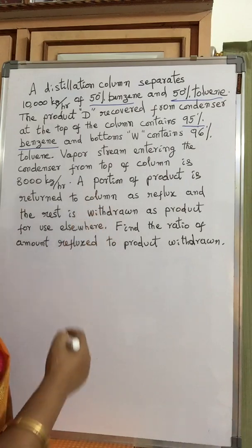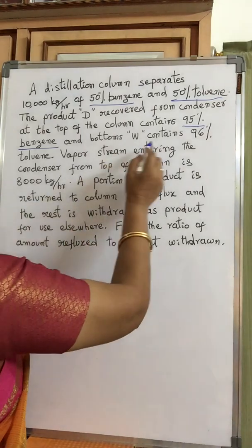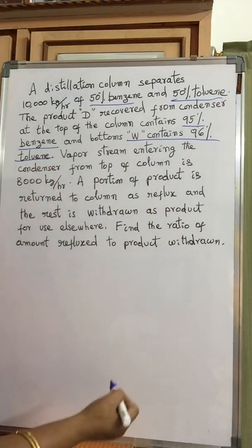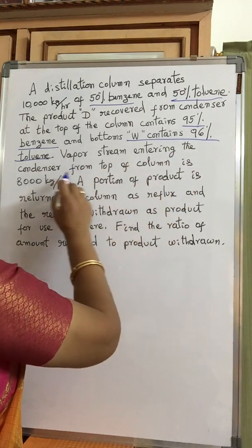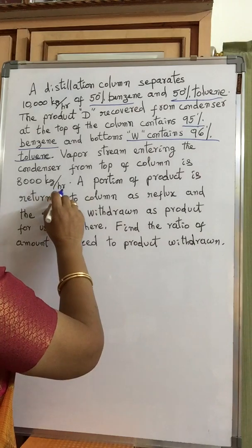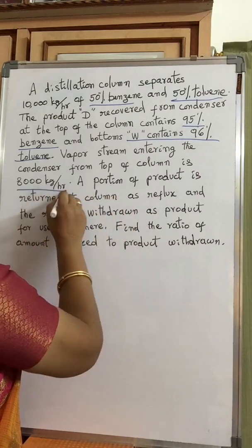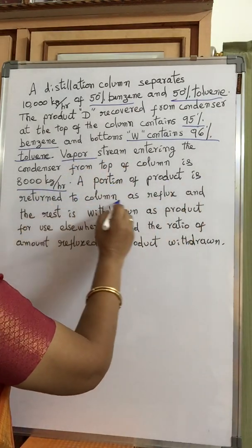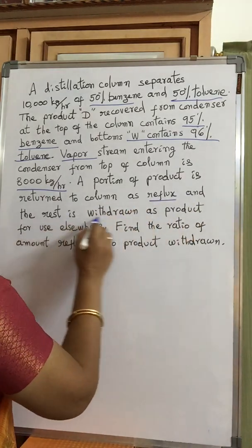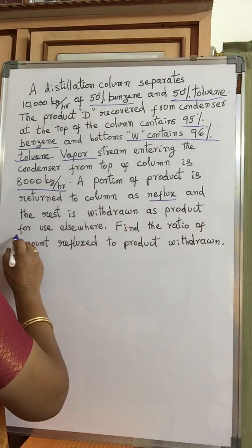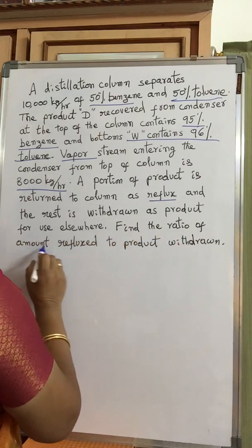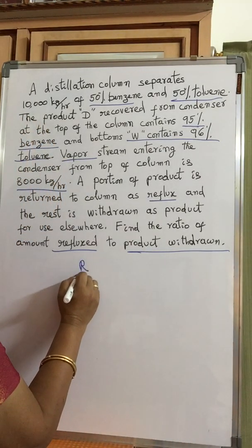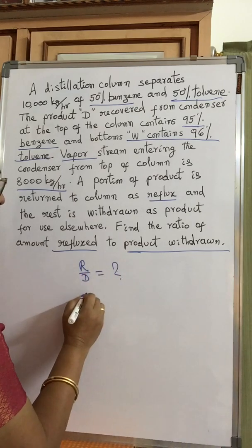Benzene is the more volatile component, which has a lower boiling point. The bottoms product contains 96% toluene — the bottom product contains mostly toluene. The vapor stream entering the condenser from the top of the column is 8,000 kg per hour. A portion of the product is returned to the column as reflux and the rest is withdrawn as product. Find the ratio of amount refluxed to product withdrawn — that is, the reflux ratio R/D.